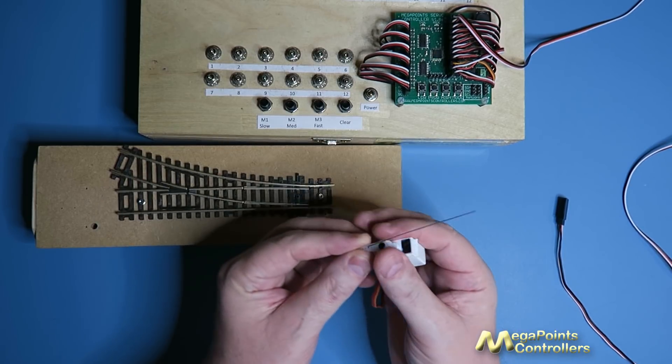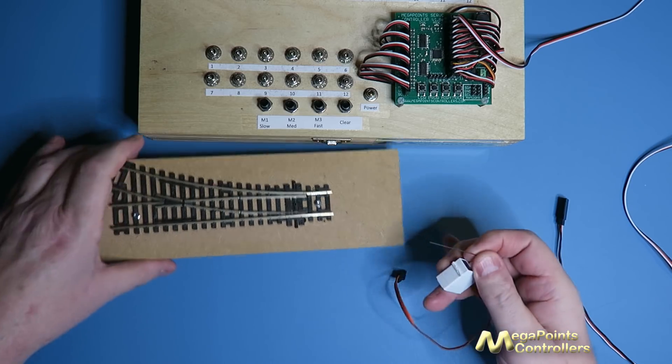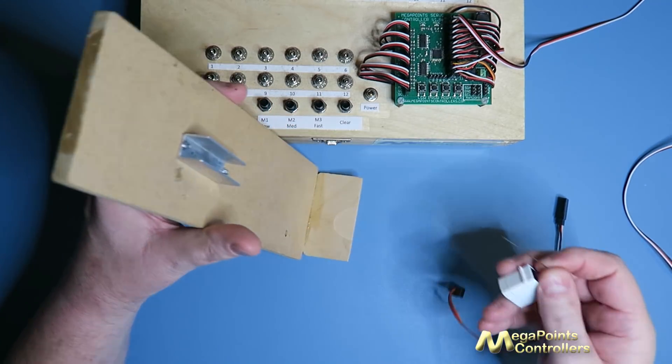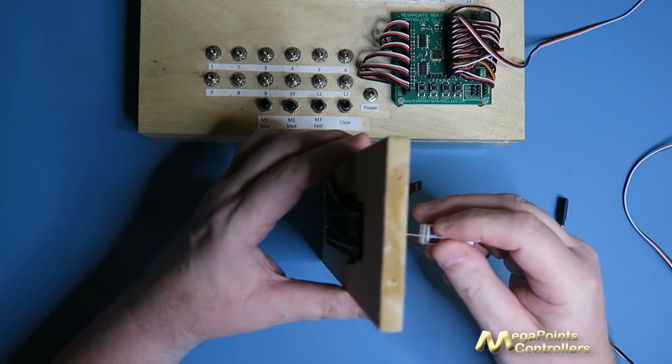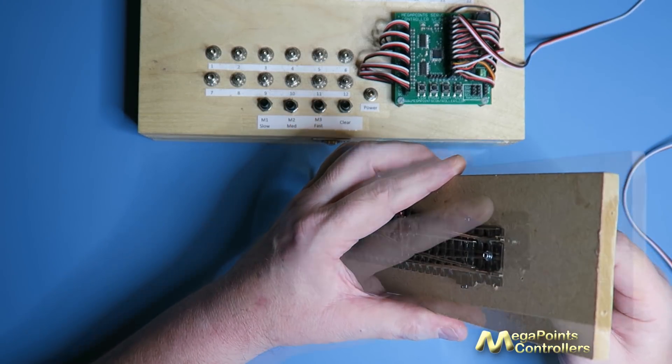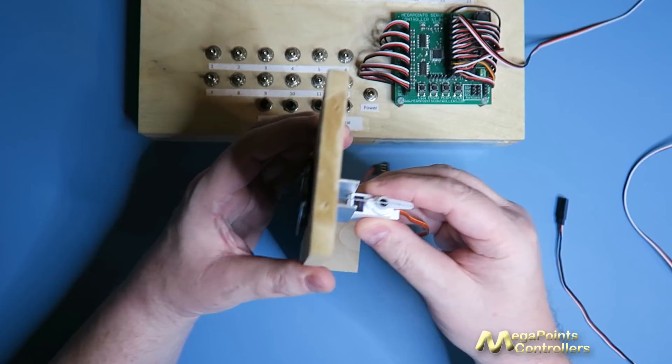Many of you will have seen me take a servo and attach it to a set of points from underneath or on top. Let's poke it through the tie bar. There we go, drop it in.